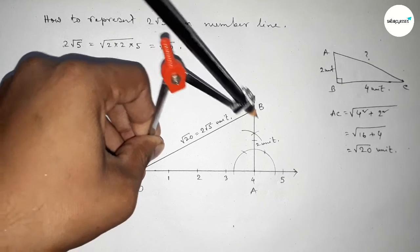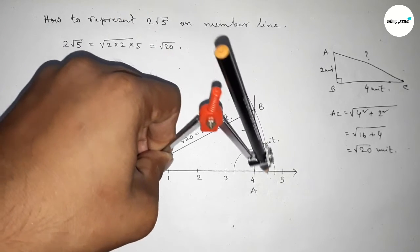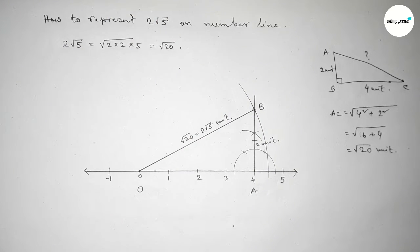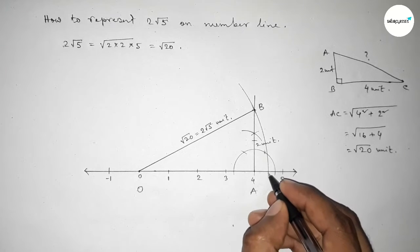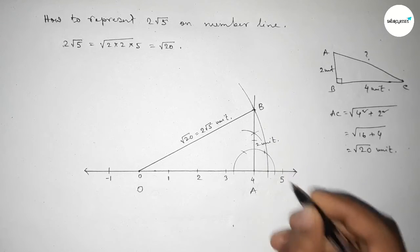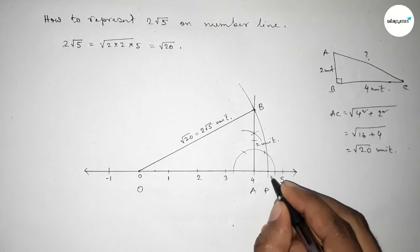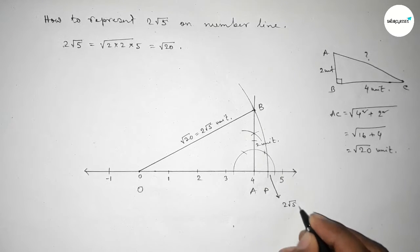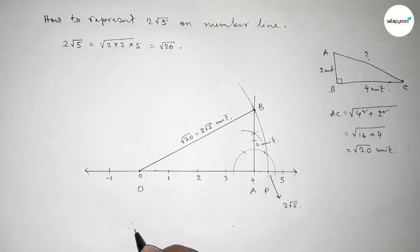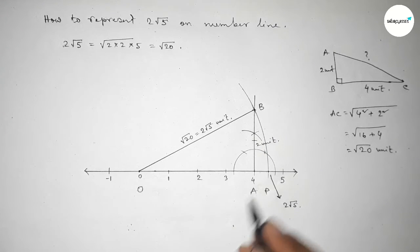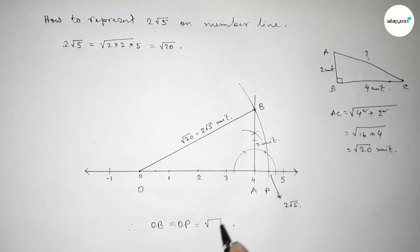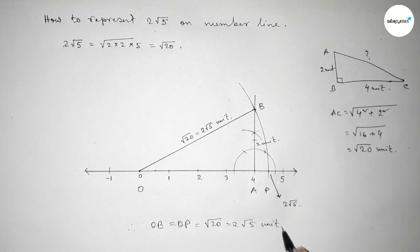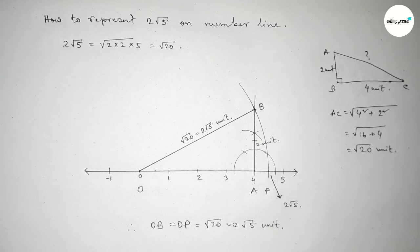Taking here a point P. This is the 2√5 on number line. Therefore OB equal to OP equal to 2√5 or √20 unit. So that's all, thanks for watching.